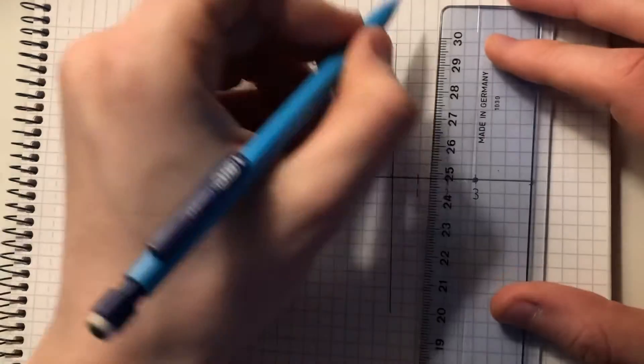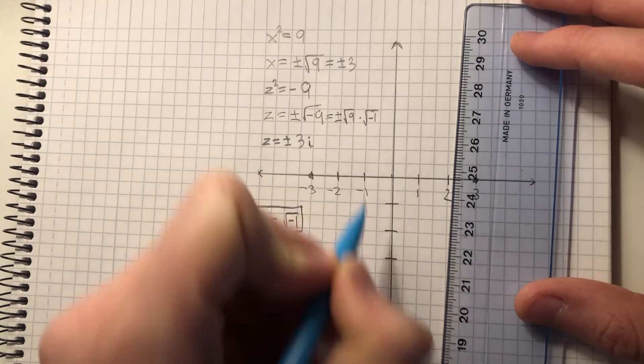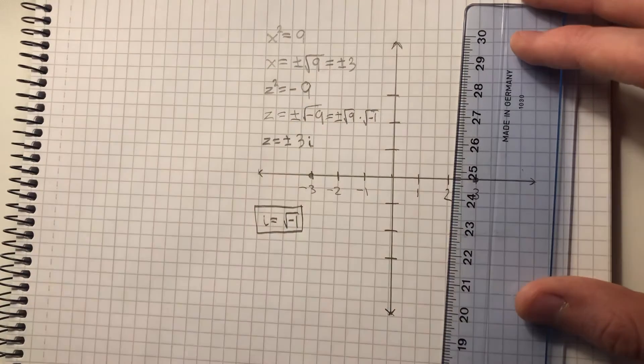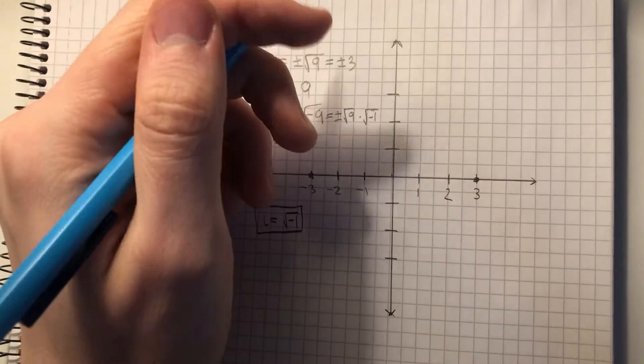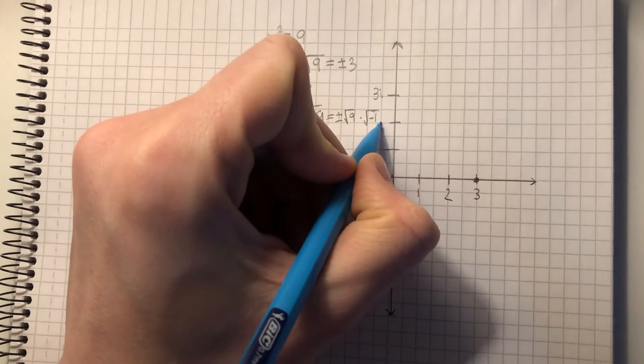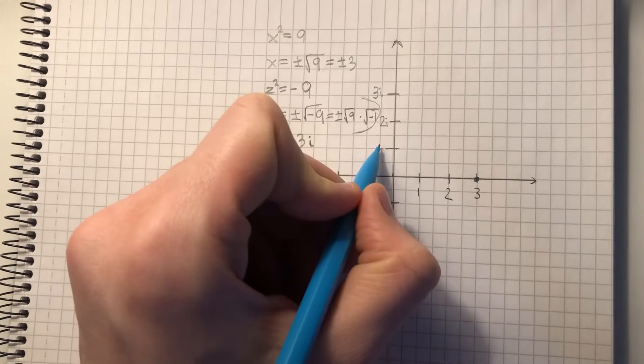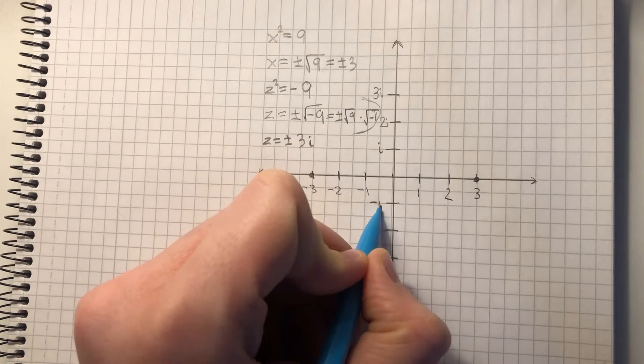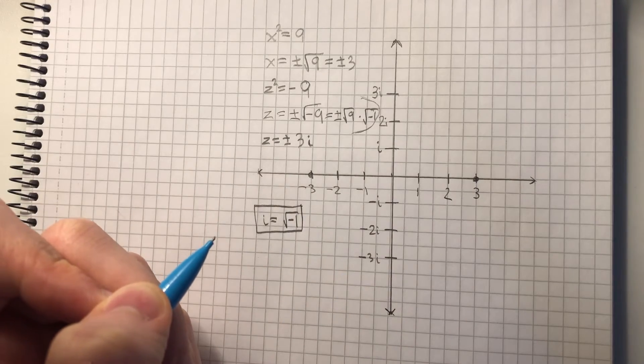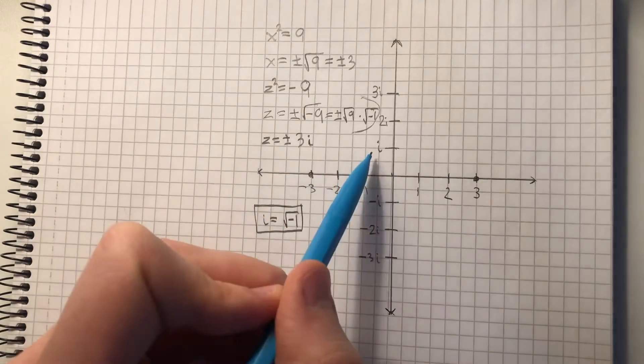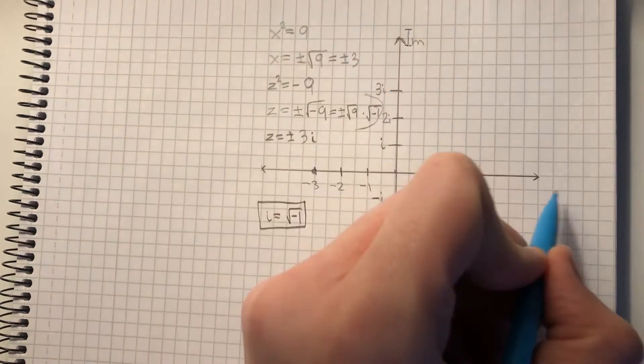So here we write 3i, 2i, i, minus i, minus 2i, minus 3i. Essentially what we did was just take the real number line and multiply i by the value. So this is the imaginary number line and this is the real number line.